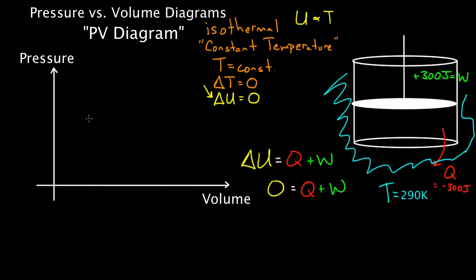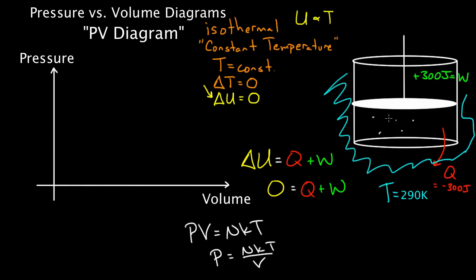What does an isothermal process look like on a PV diagram? Looking at the ideal gas law, P times V equals NkT. Solving for pressure: P equals NkT over V. N (number of molecules) is constant, k (Boltzmann's constant) doesn't change, and for an isothermal process temperature is also constant. So everything in the numerator is constant, meaning P as a function of V is just a constant over V.